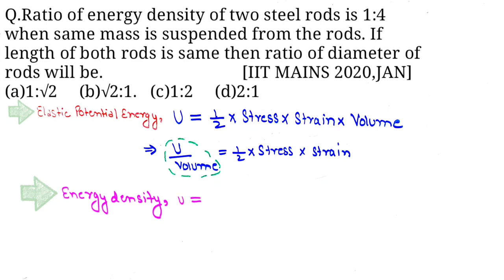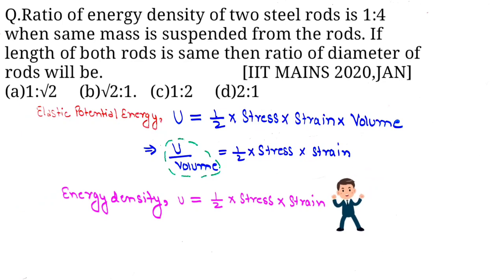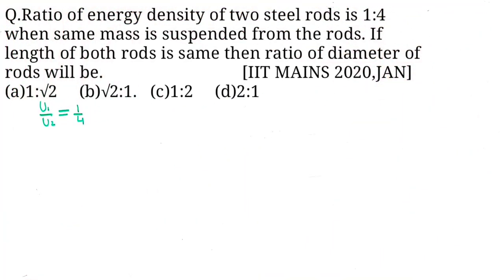So the formula of energy density is half into stress into strain. In this question, the ratio of energy density of a steel rod is 1 is to 4 when the same mass is suspended from the rod. If the length of both rods is the same, then the ratio of diameter of the rods will be found.